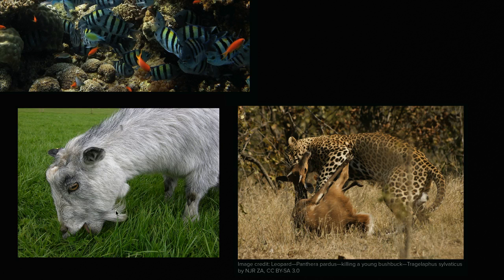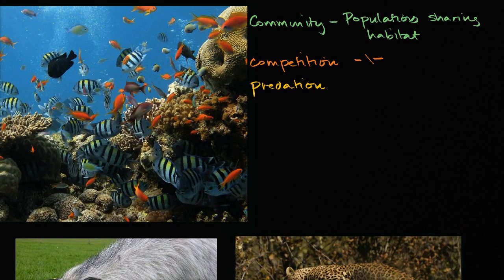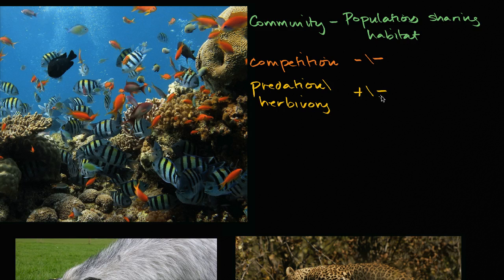In the case of the goat eating grass, that specific type of predation is called herbivory — a special case of predation. You'll often see a plus/minus notation for predation. The more of the species that is being eaten, the more it benefits the predator. But the more of the predator that you have, it's going to have a negative effect on the actual prey.